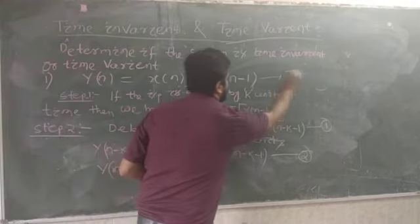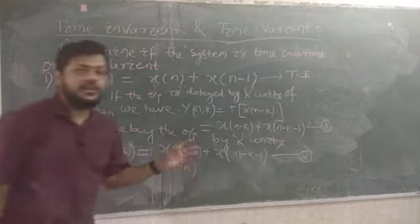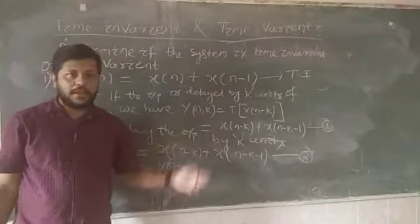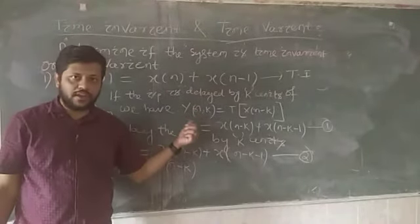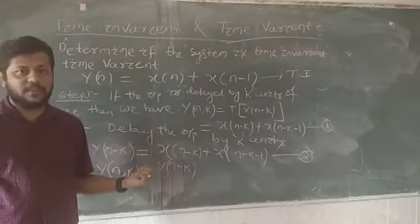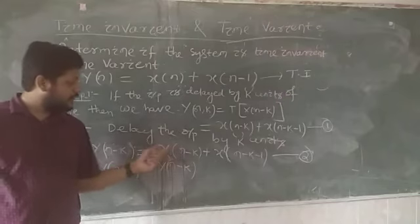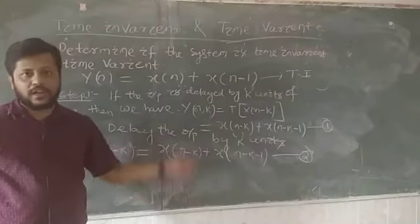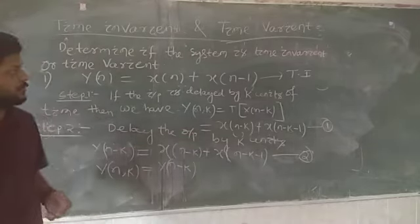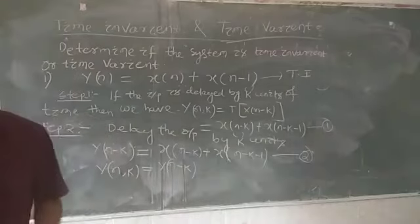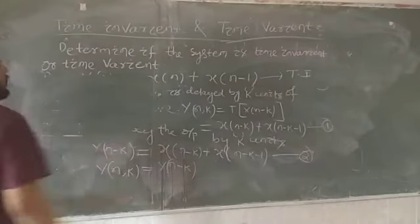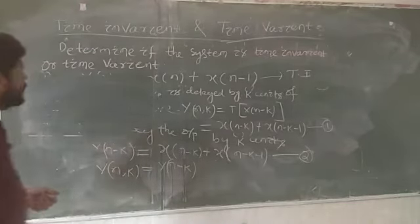Since y(n, k) equals y(n-k), it is proved that this system is a time invariant (T.I.) system. When we delayed the input we got x(n-k) + x(n-k-1), and when we delayed the output by the same k units we got the same equation. Both equations are equal, hence the system is time invariant.